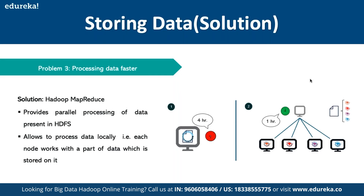The third problem — processing data faster — is solved by MapReduce, which provides parallel processing of data in HDFS. Each node works with the part of data stored on it. For example, if we give a job of processing 1,000 pages to a single system, it takes four hours. But on a distributed system of four connected nodes each processing 250 pages per hour, the same job takes only one hour — similar to the classic math problem: if one worker finishes a building in 30 days, three workers take ten days.